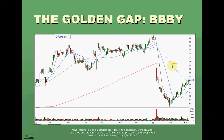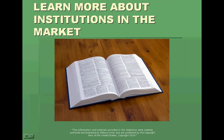Then we have BBBY. You can see the footprint of BBBY right here — this is back in January 2014 — the footprint of institutional selling. You can see how BBBY went from around $72 all the way down to $62 in just a few very short days and weeks. So learn more about institutions in the market. If you want to be successful trading, you've got to learn how to read trends right and get your directional bias correct in your positions.